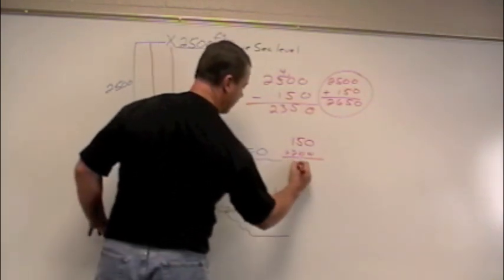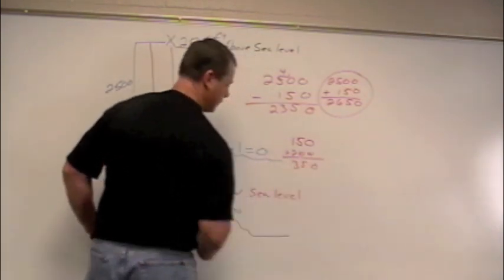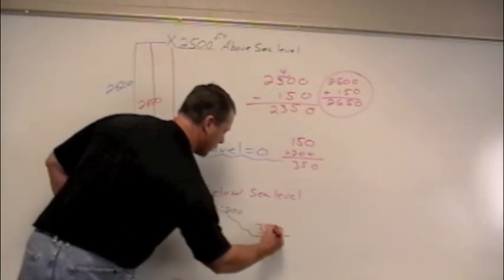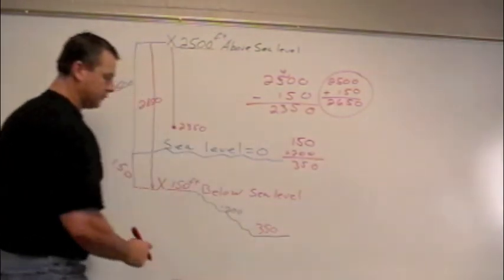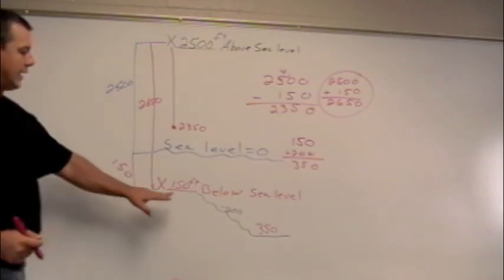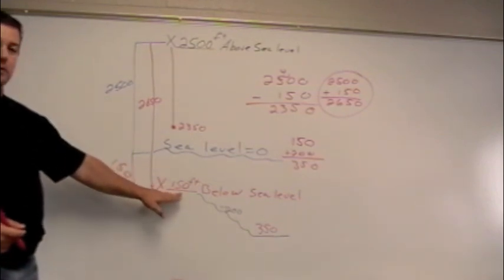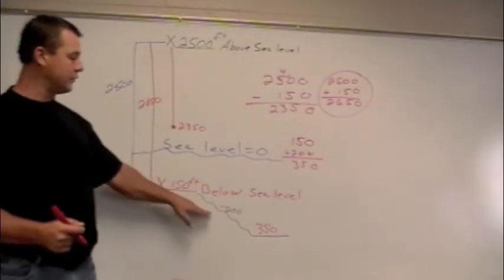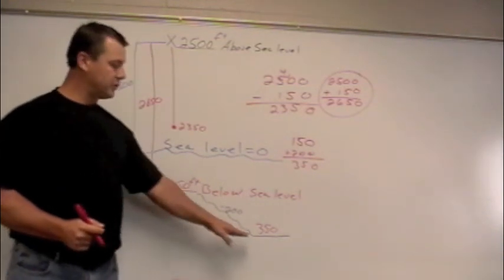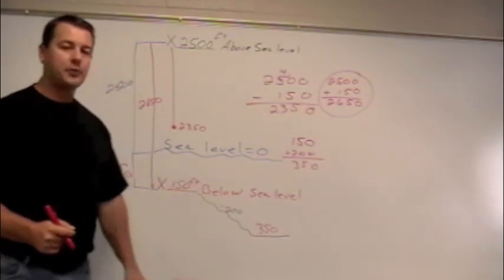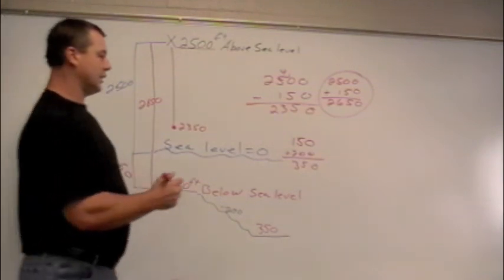And you'd end up with 350 feet. And, of course, this is going to be below sea level. So if you were asked that you started at 150 feet below sea level and it descended 200 feet, what's your new location? Your new location would be 350 feet below sea level.